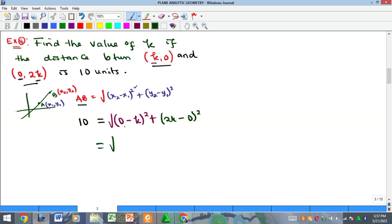And so this is equal to the square root of—this is going to give us minus k all squared, which is just the same thing as k squared, and that is plus this one is 2k alone. And when you square it, you will get 4k squared, because square of 2 is 4 and square of k is k squared. So this is going to give us 4k squared.